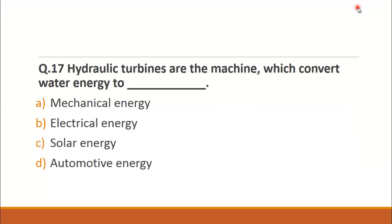MCQ number 17 is: Hydraulic turbines are the machines which convert water energy to? The choices are A. mechanical energy, B. electrical energy, C. solar energy and D. automotive energy. Hydraulic turbines convert water energy into mechanical energy and then this mechanical energy is converted into electrical energy. So the right choice for this question is A. mechanical energy.